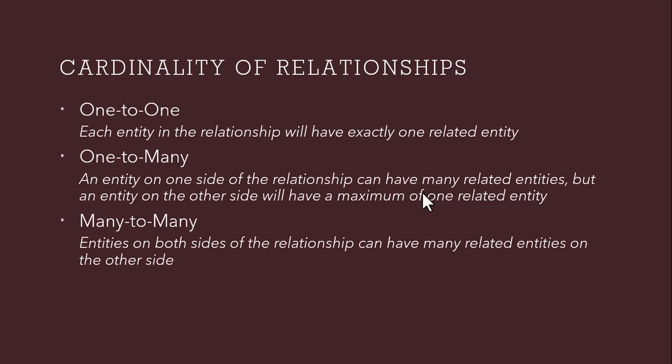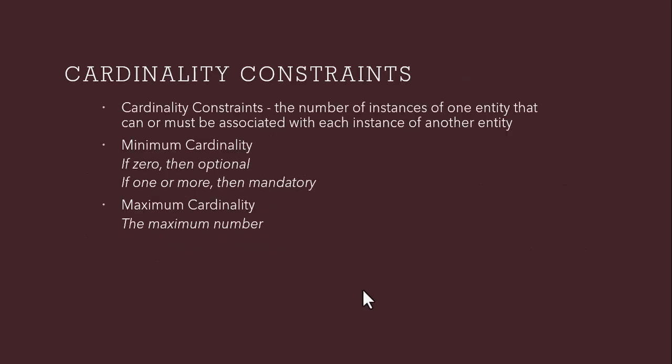In one-to-many cardinality, on one side of the entity there is one related entity and on the other side there is the possibility of many related entities. In a many-to-many relationship, entities on both sides of the relationship can have many related entities on the other side.